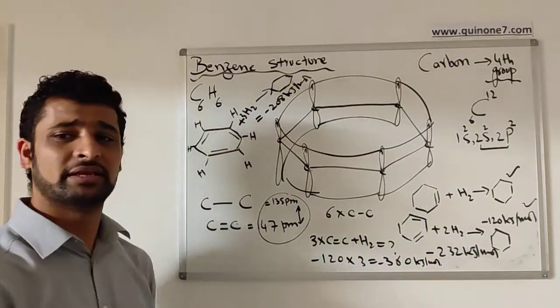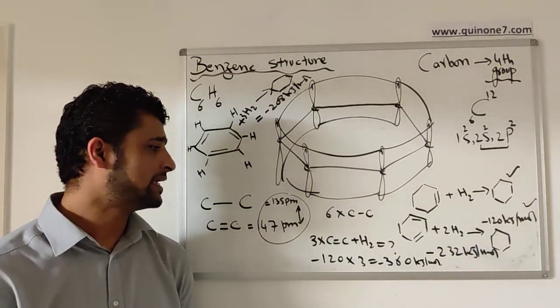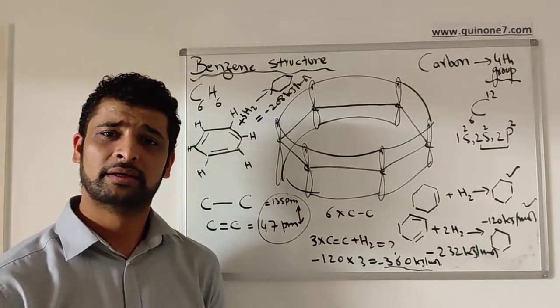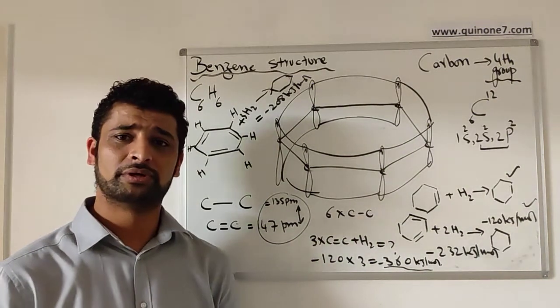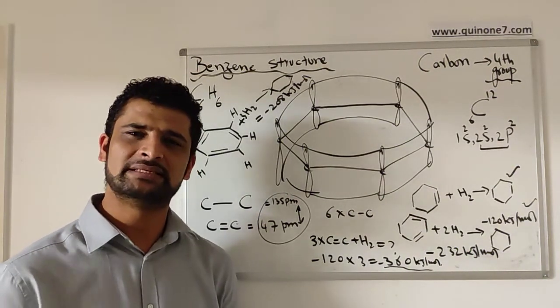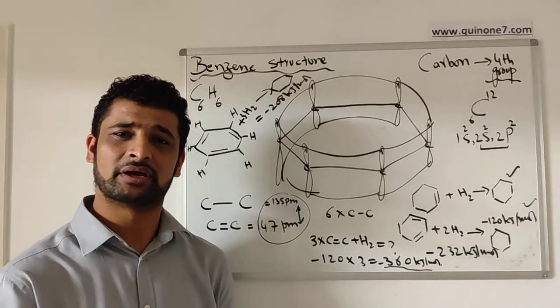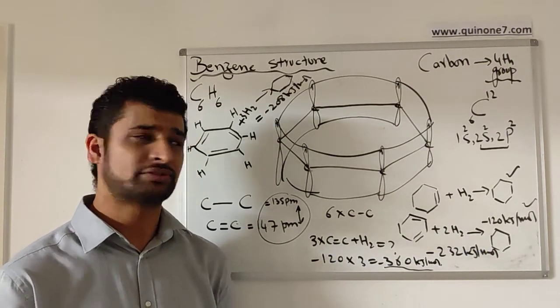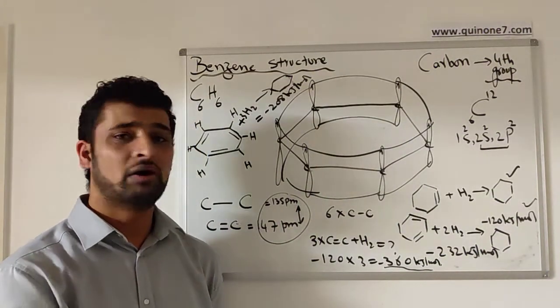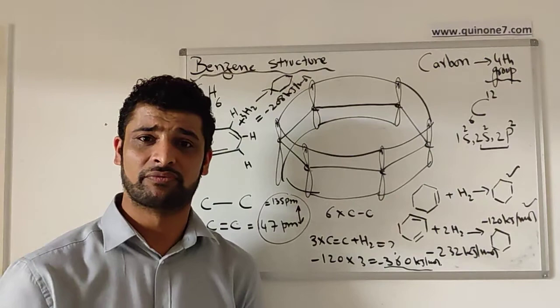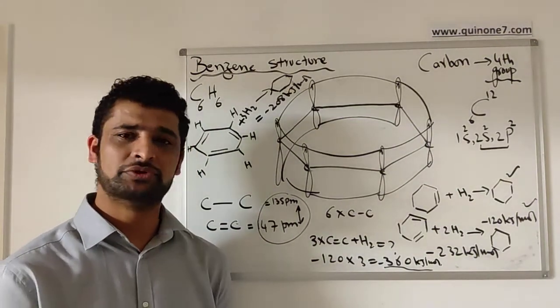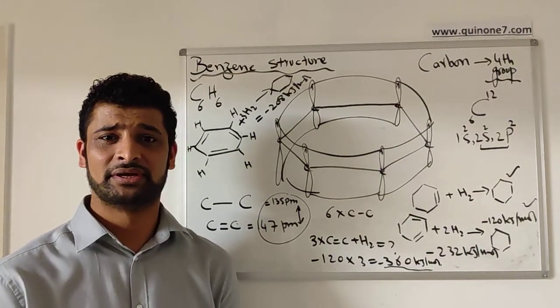That means it will be less than the energy from doing the hydrogenation of each bond from cyclohexene. That shows the stability of the benzene ring is a lot greater than cyclohexene itself. Benzene is very stable due to the delocalization of electrons, and this is an unsolved mystery.